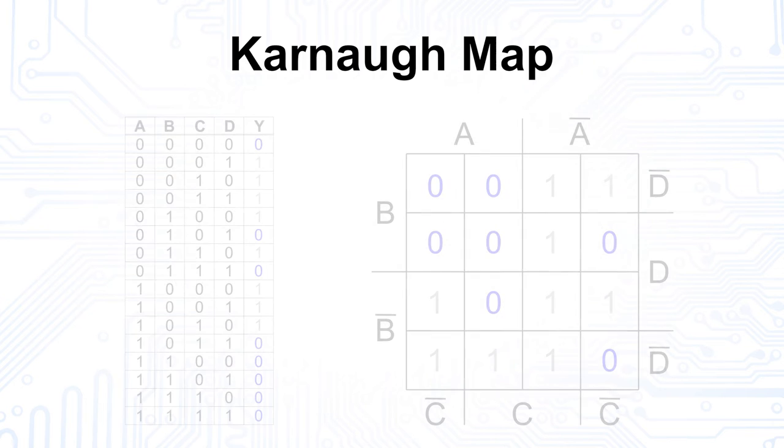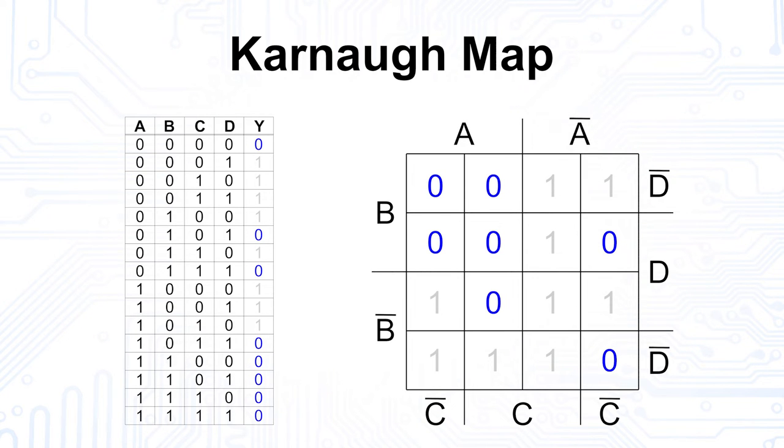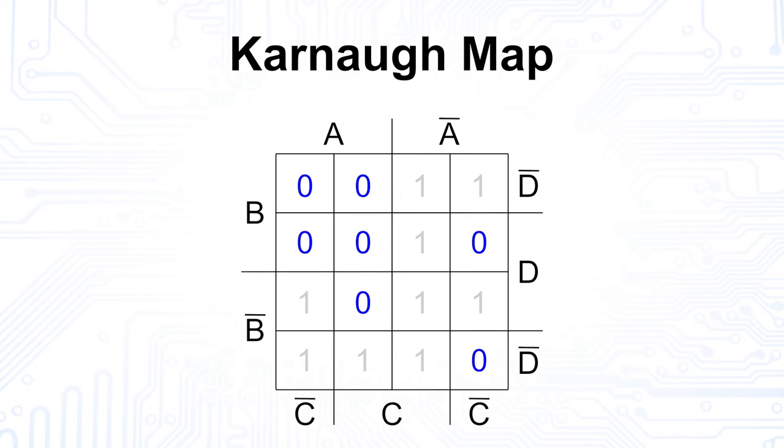In the next step, we enter all low states from the table into the map. Now, we can already recognize the first patterns. We start to look for groups of two or four connected input variables, like this one or this one. The fields may overlap, as here, and may also extend beyond the edge, as here. In cases where there are no connected fields of two or four, the variables remain alone.